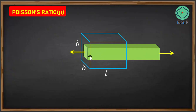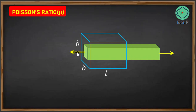In the length of this particular member, there is a positive strain — positive strain means there is elongation. But in the height of this particular member, there is a negative strain, as well as there is a negative strain in the breadth of this particular member.